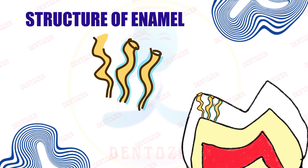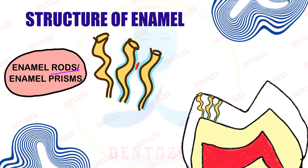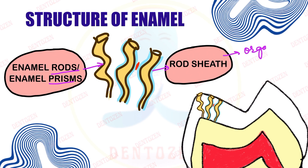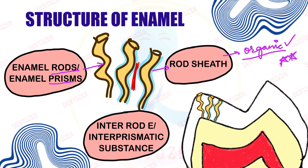Along with the enamel rods — also known as enamel prisms — surrounding them is a sheath known as rod sheath. This rod sheath is the organic material of enamel. That is another viva question: what is the organic material of enamel known as? Rod sheath. Third, in between the enamel rods we can see another thing known as interrod enamel — inter meaning in between — also known as interprismatic substance.